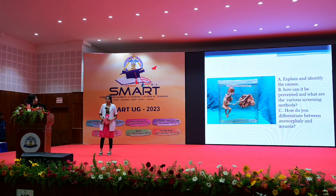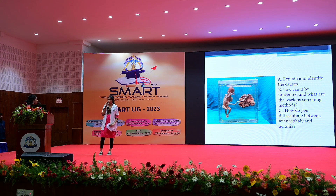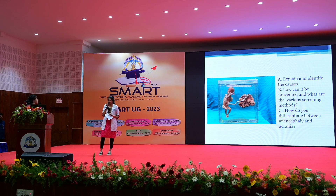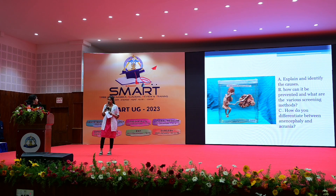How do you differentiate between anencephaly and acrania? Anencephaly is devoid of cranium and the telencephalic structures below the skull and orbits. But in acrania, there is also absence of the cranium, but there will be presence of disorganised brain tissue. Both are part of the same spectrum.